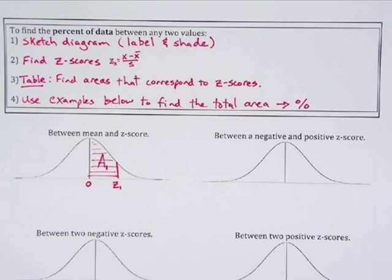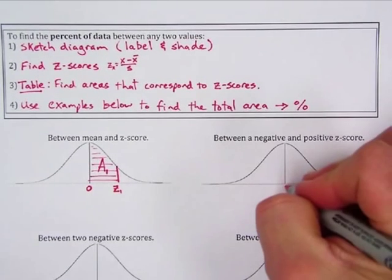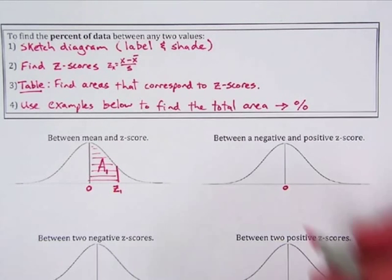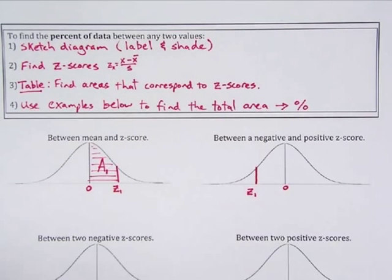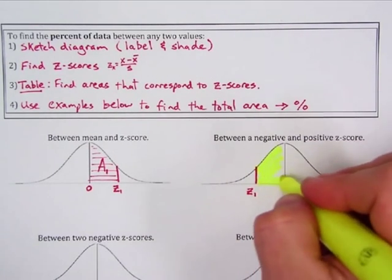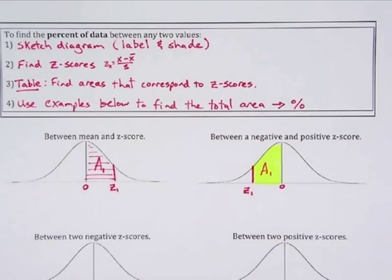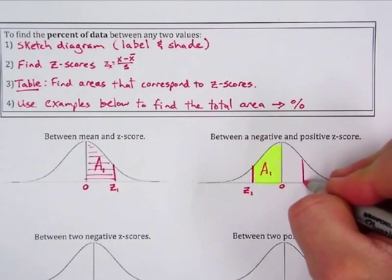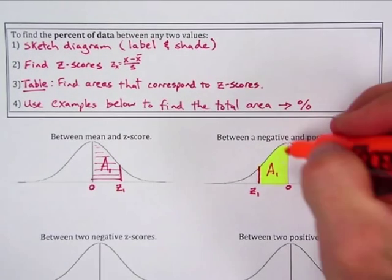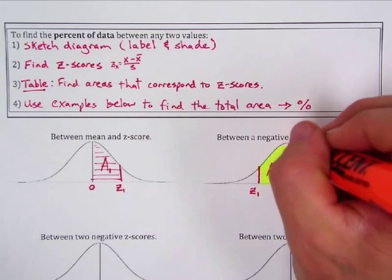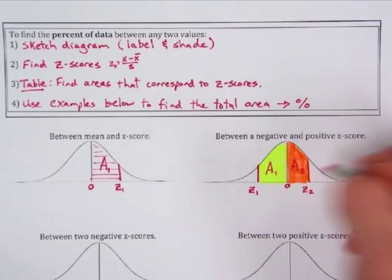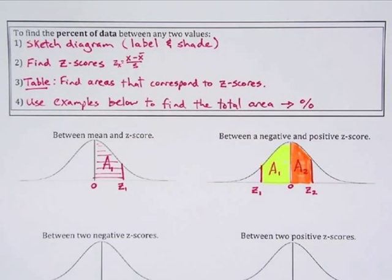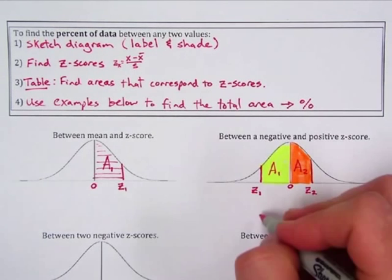For the area between a negative and a positive z-score: here's the mean at z = 0, a negative z-score z₁ is to the left with area A₁, and a positive z-score z₂ is to the right with area A₂. To find the total area between a negative and a positive z-score, you add the two areas: A₁ + A₂.